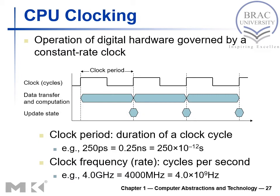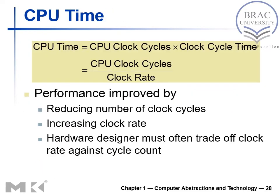CPU clocking: digital hardware is governed by a constant clock rate. When discussing clock rate, there are two associated concepts: clock period and clock cycle. Clock period is the duration of one cycle. Clock frequency is cycles per second — how many times this period occurs per second.